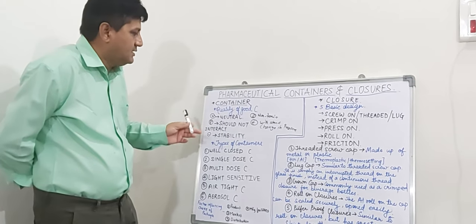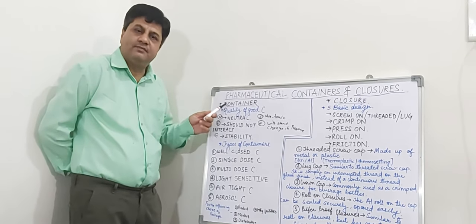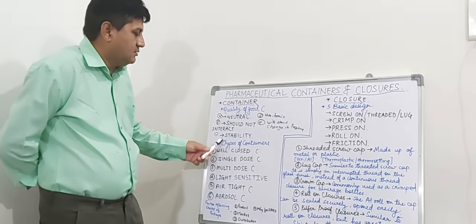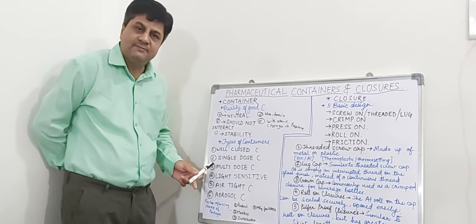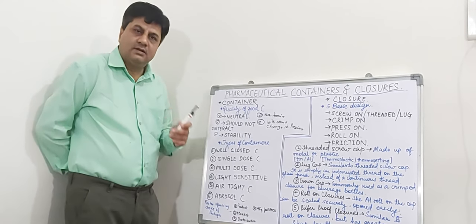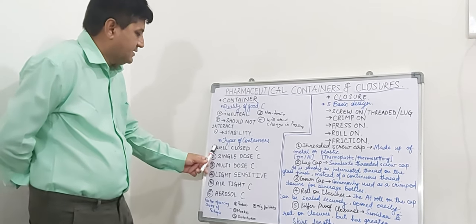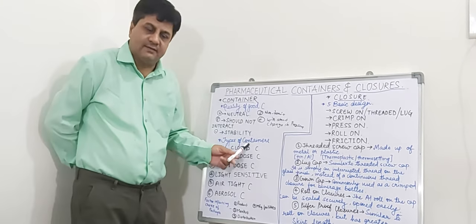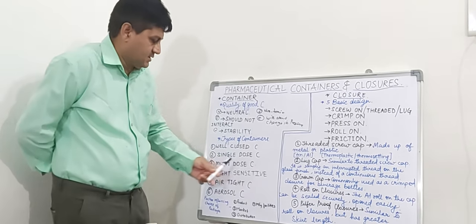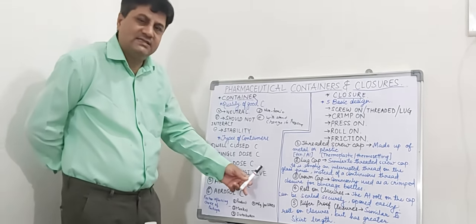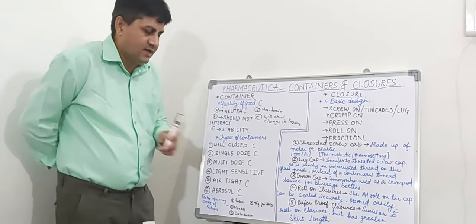If all these qualities are available, then we can go for the selection of that type of container. When we talk about the types of containers, there are six types: the first is the well-closed container, the second is the single-dose container, the third is the multi-dose container, the fourth is the light-sensitive container, the fifth is the airtight container, and the last is the aerosol container.